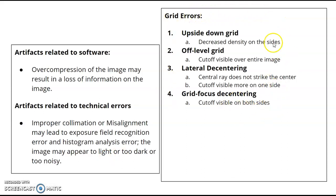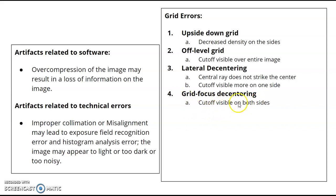Here are four grid errors to know. The upside-down grid results in decreased density on the sides. An off-level grid can happen in ER situations where the cassette under the patient is off-level — you'll have cutoff visible over the entire image. Lateral decentering is when the central ray is not striking the center of the grid, and cutoff is more visible on one side. Grid-focused decentering occurs when you're outside the focused distance range — if you're past 72 inches, you'll get cutoff visible on both sides.